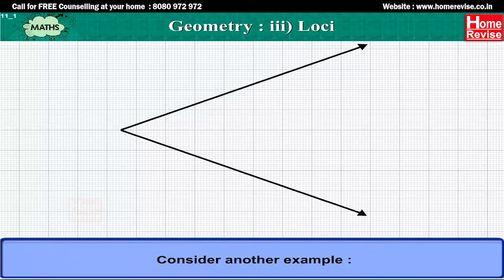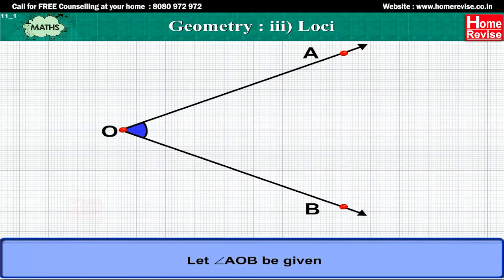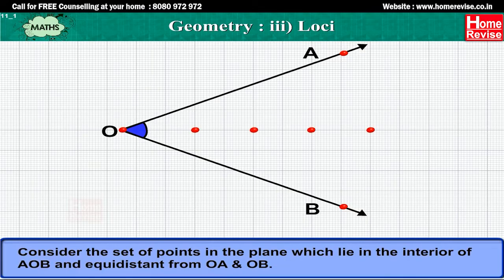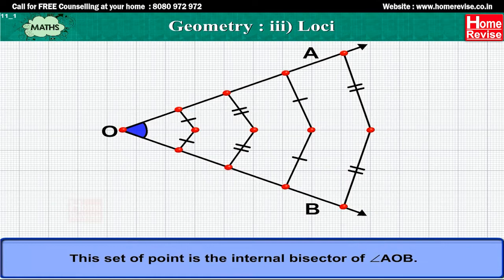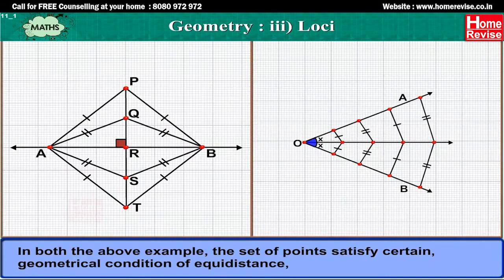Let us consider another example. Let angle AOB be given. Consider the set of points in the plane which lie in the interior of angle AOB and are equidistant from OA and OB. This set of points is the internal bisector of angle AOB. In both the above examples, the set of points satisfies the geometrical condition of equidistance.